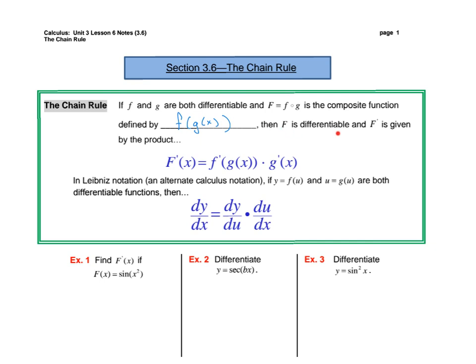Then F is differentiable and F prime is given by the product shown here. What I want you to notice is that we are taking the derivative of the f function and we are taking the derivative of the g function. Notice that this g of x right here is really just copying the g function — we are just going to copy that.